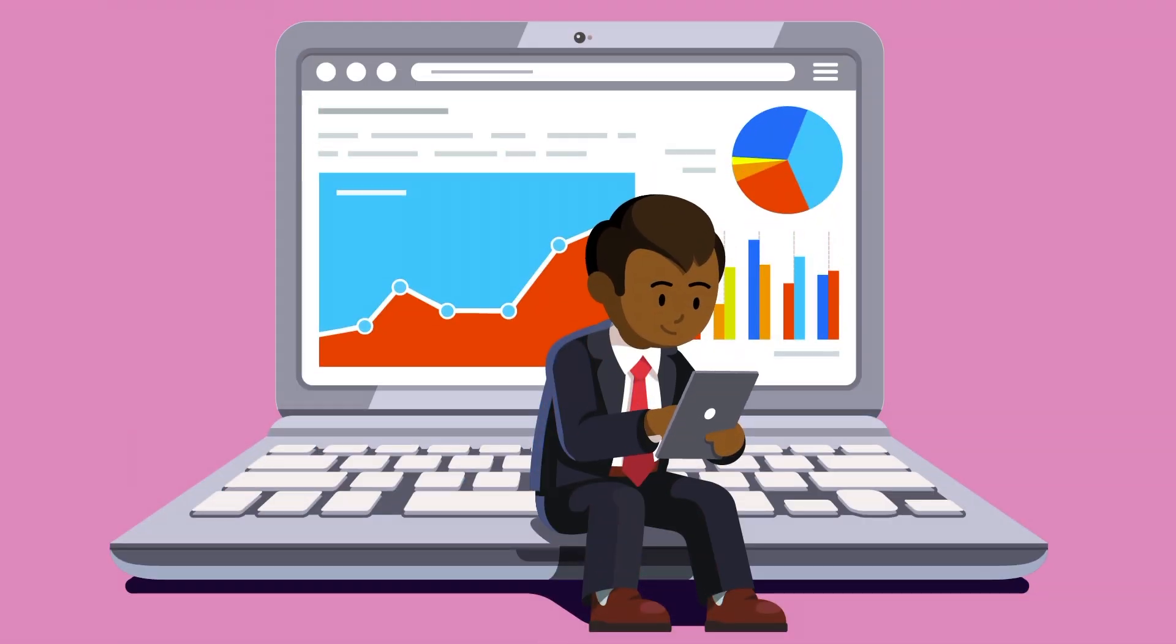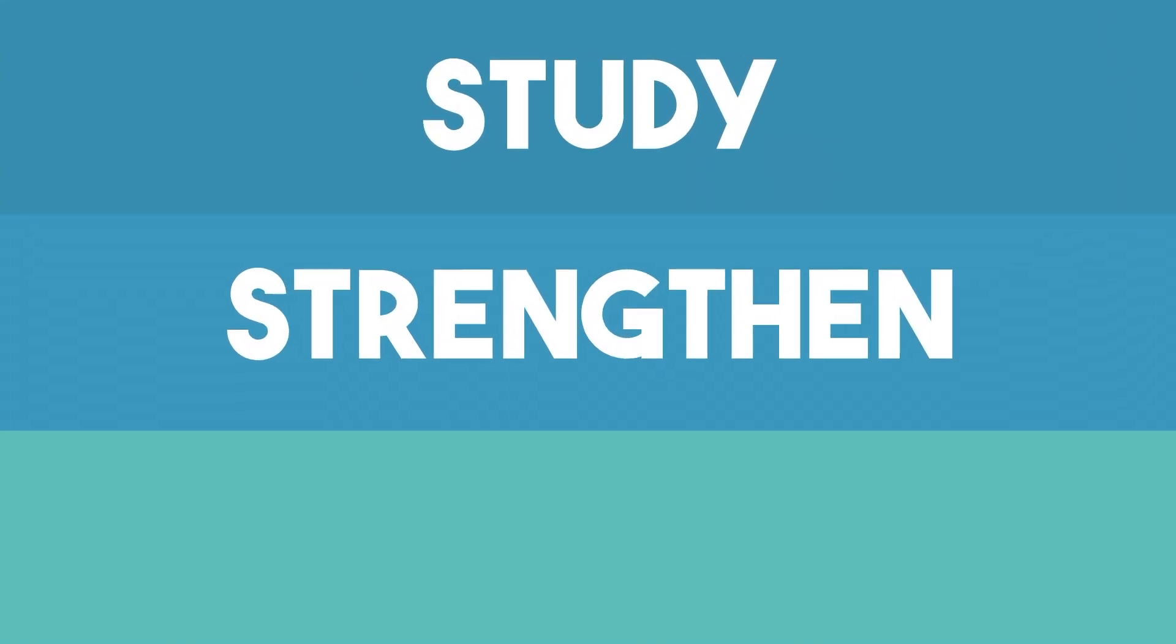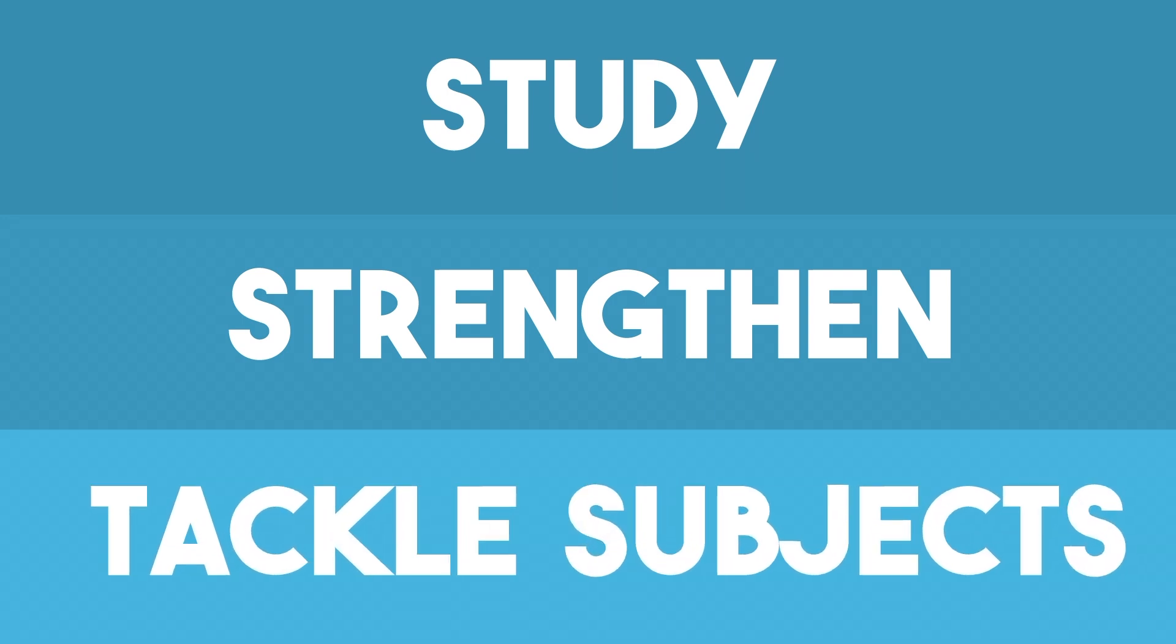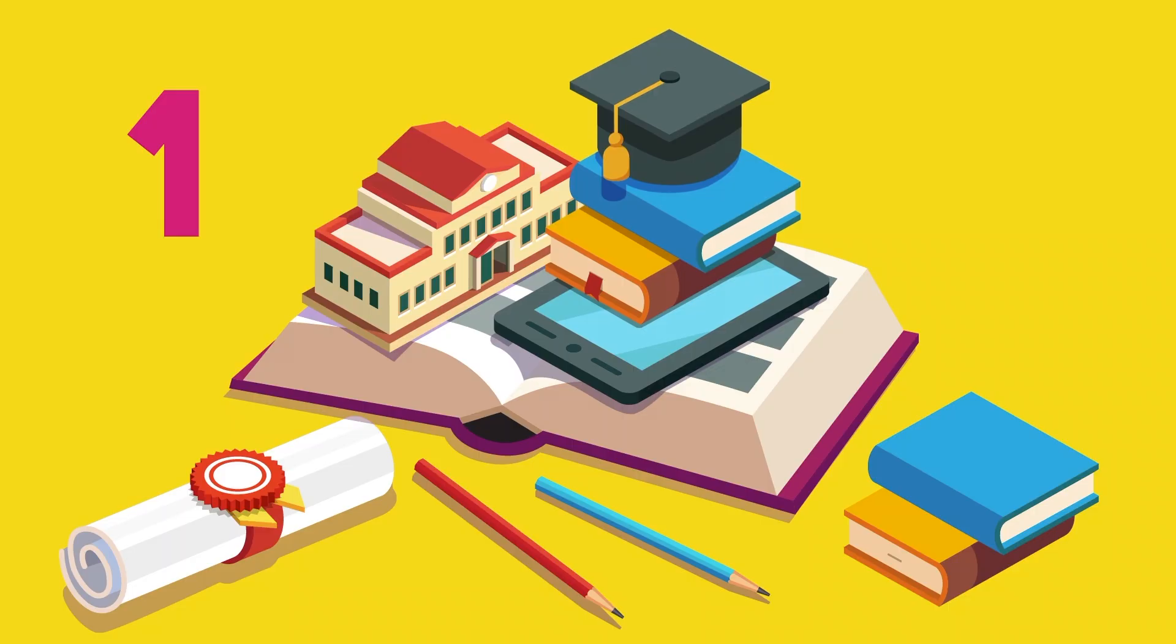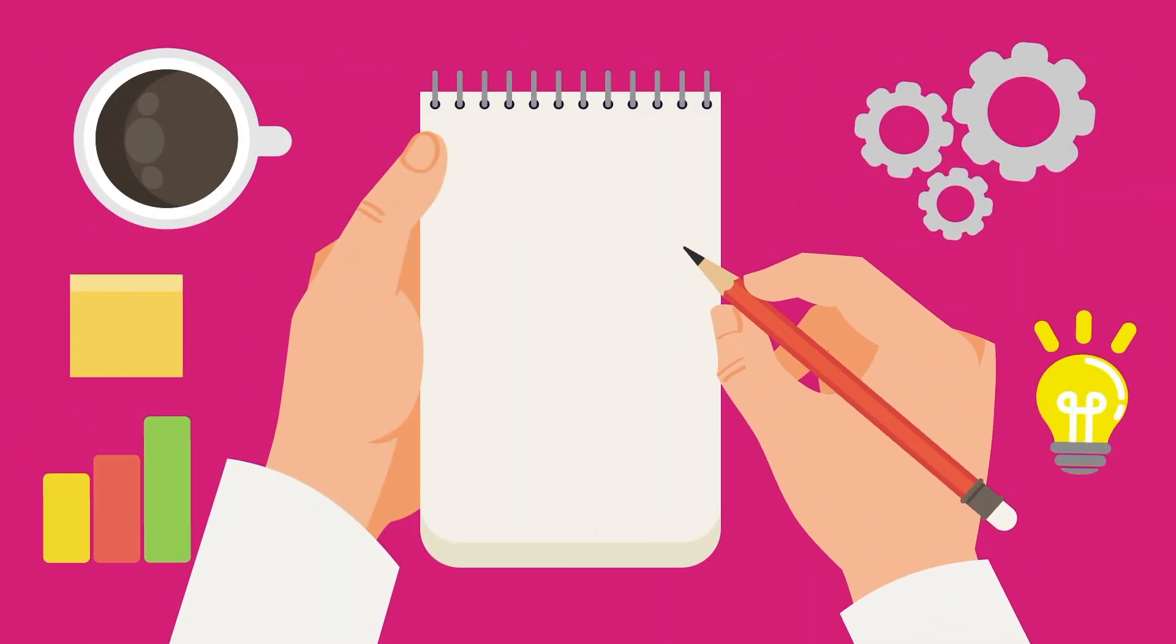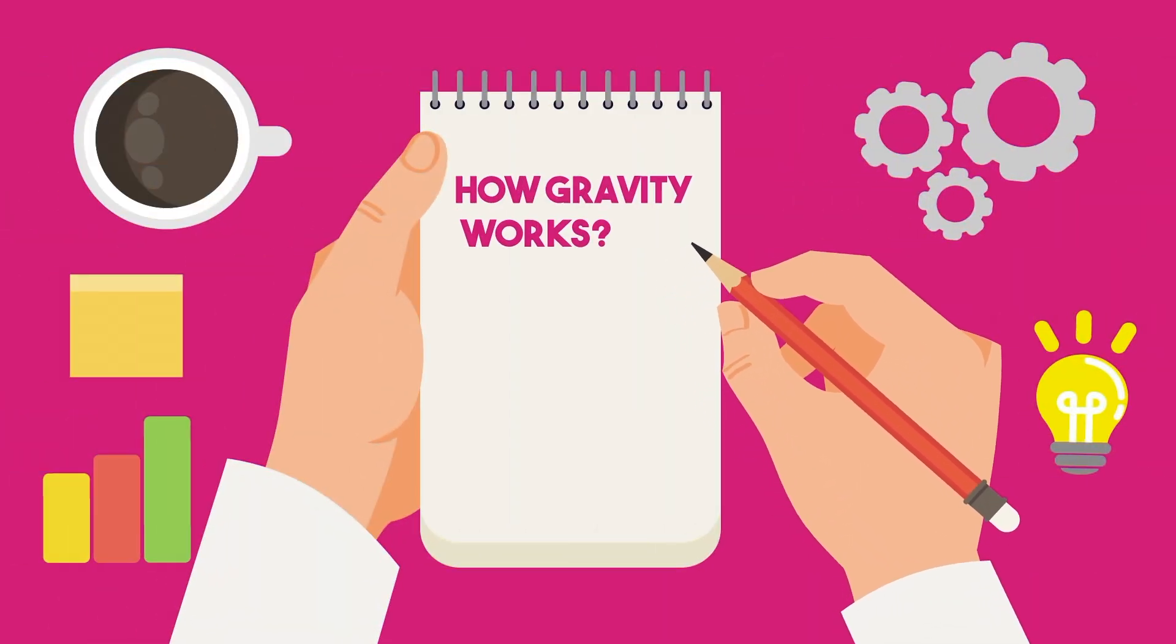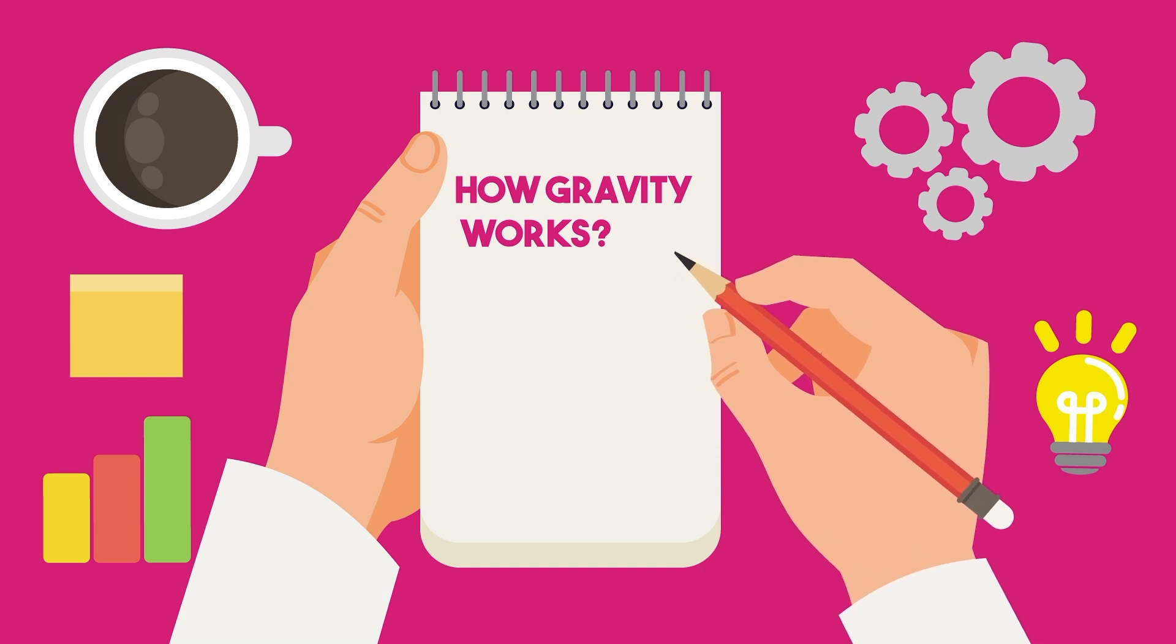But how do you use the Feynman technique to learn what you want to learn? The Feynman technique uses four easy steps to help you study, strengthen your knowledge, or tackle confusing subjects. The first step is choosing what you want to learn. Take out a blank sheet of paper and a pen or pencil. At the top of the page, write down the subject you want to understand. Let's say, for example, you want to learn how gravity works.